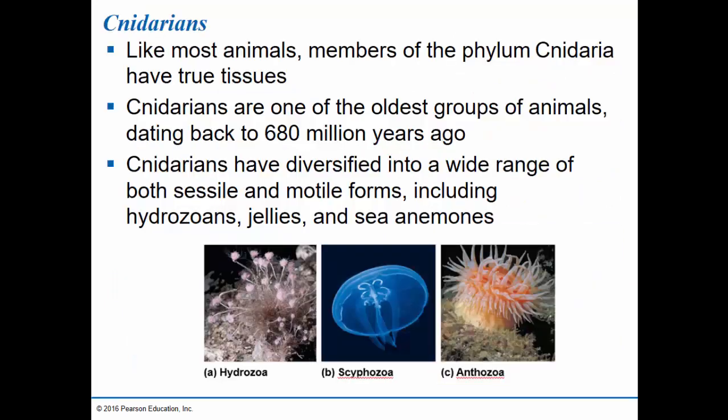Recall that the cnidarians belong to a phylum that diverged from other animals shortly after the sponges did, so they've been separate from more advanced groups of animals for a fairly long period of time. Cnidarians appear to have evolved about 680 million years ago. Since that time, they've diversified into a wide range of forms — some are sessile, meaning they stay rooted in one place like the corals on a coral reef, while others are mobile, like the jellyfish.